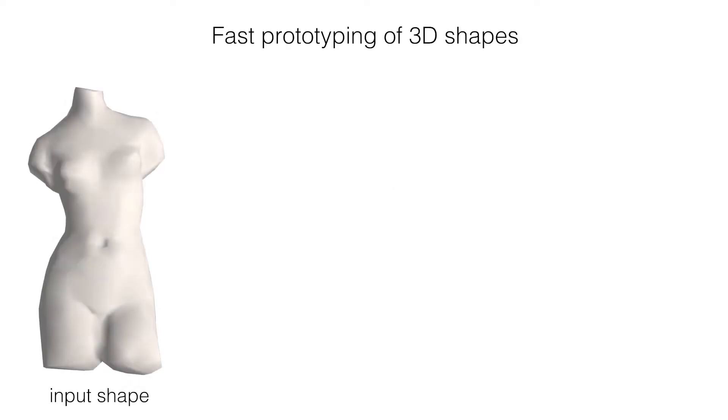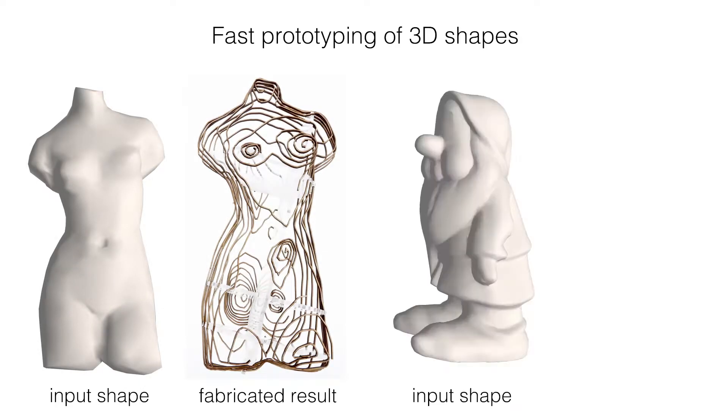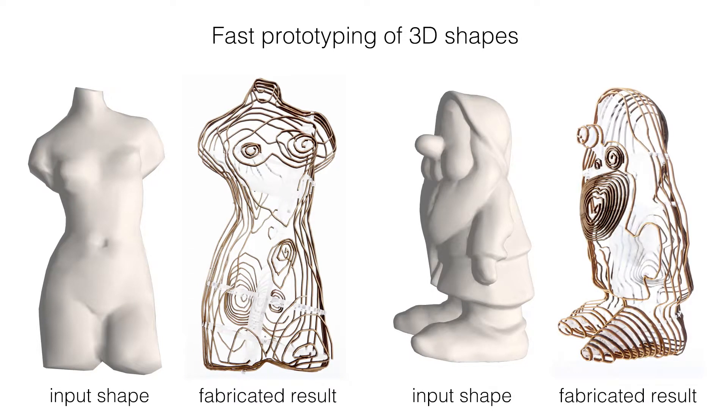Our spiral allows for fast prototyping of three-dimensional shapes. The Venus consists of nine parts and the dwarf of eight parts.